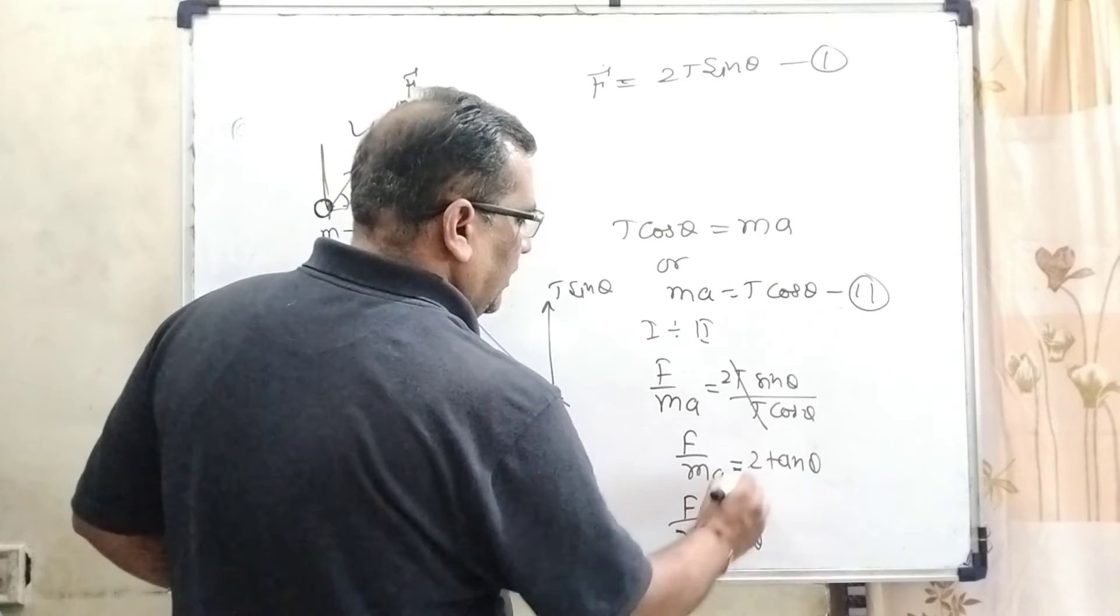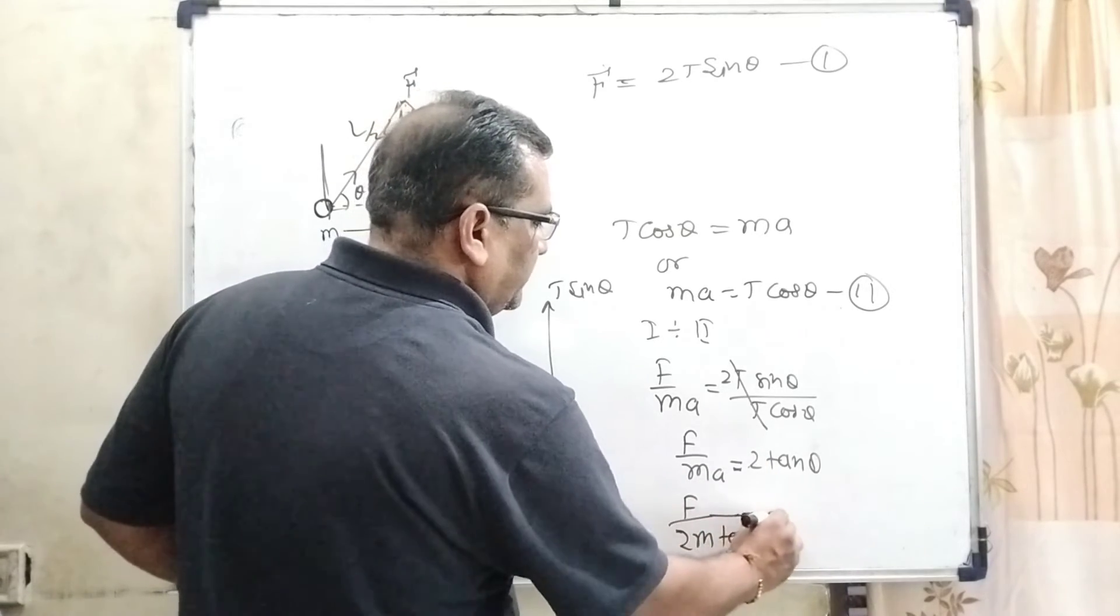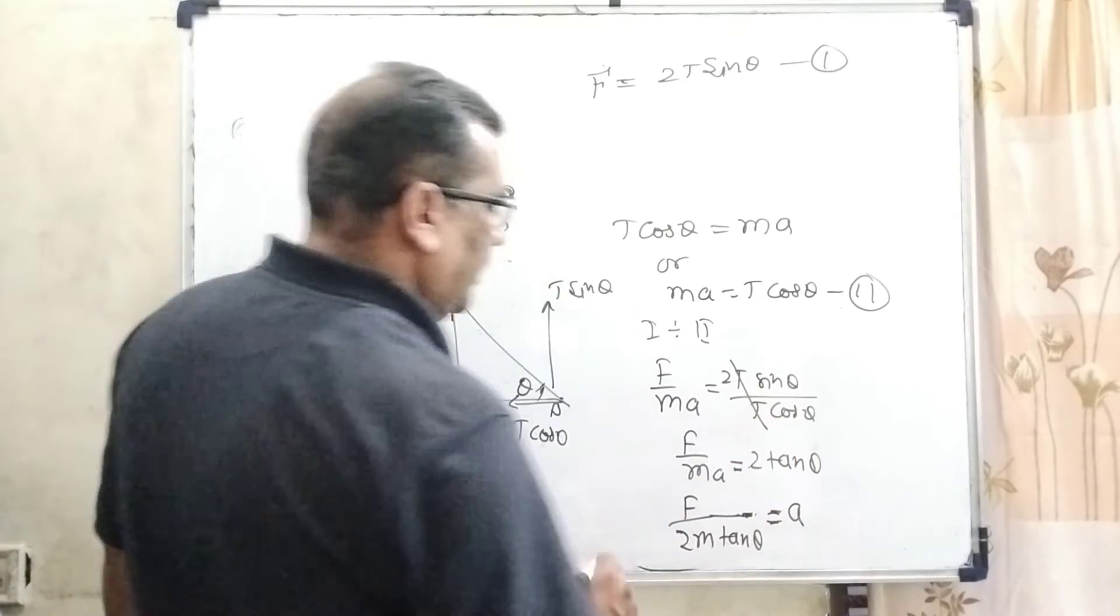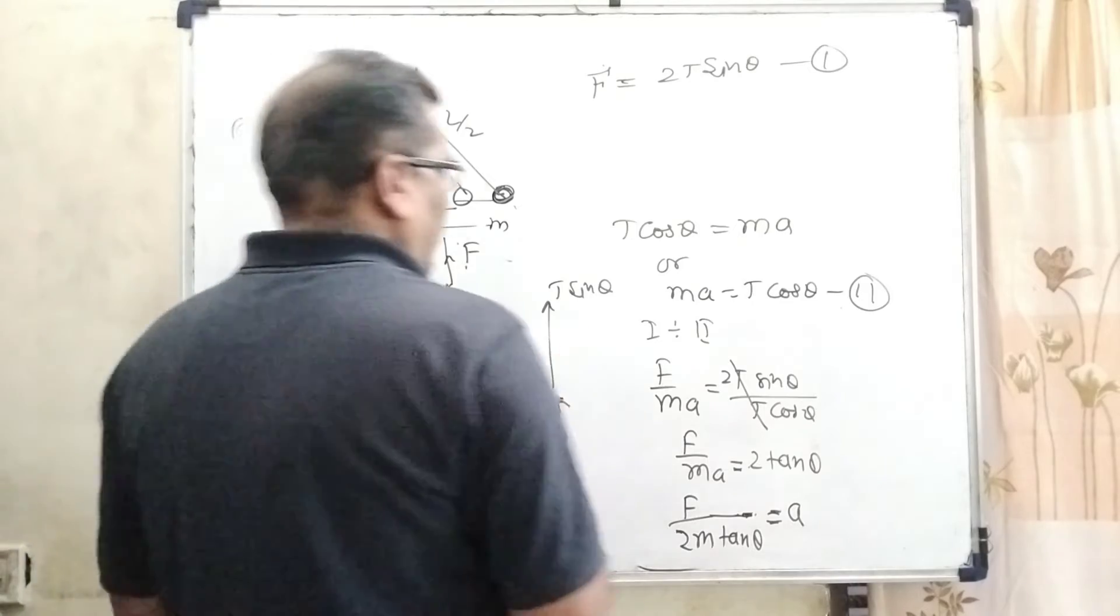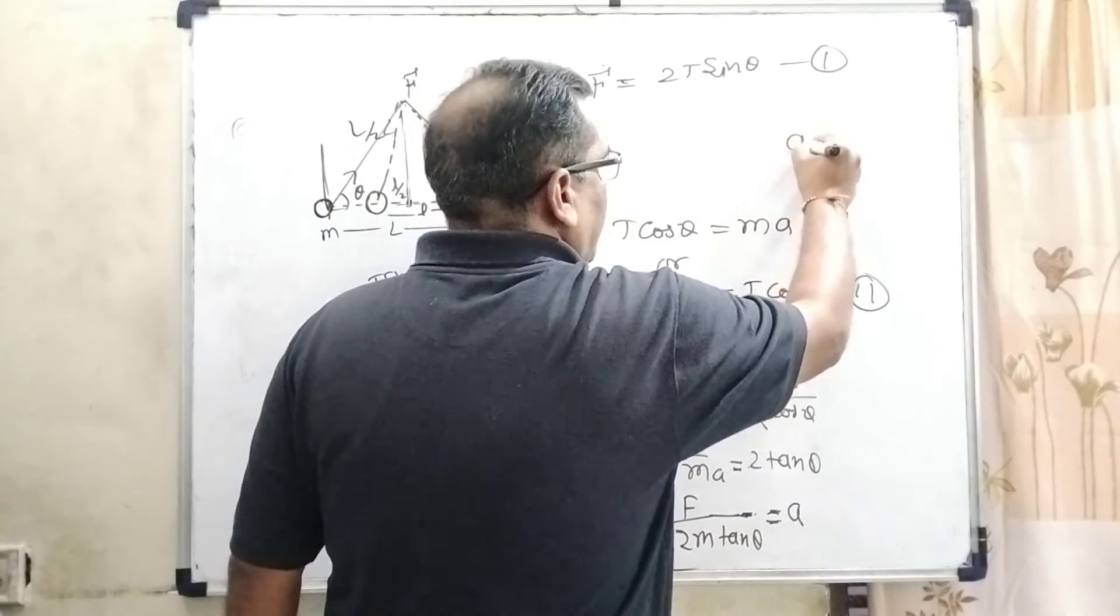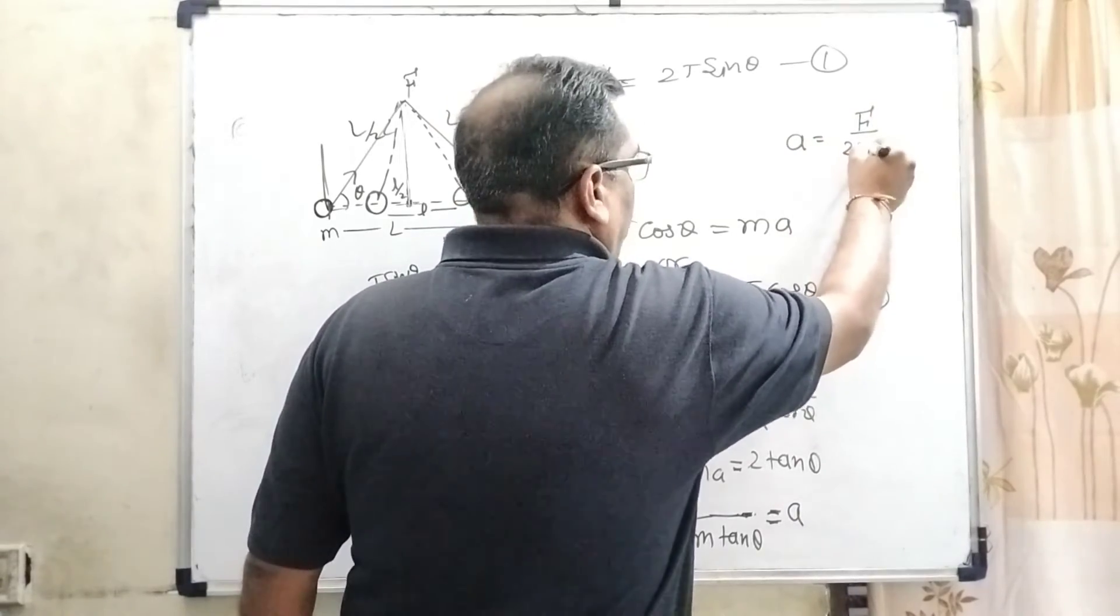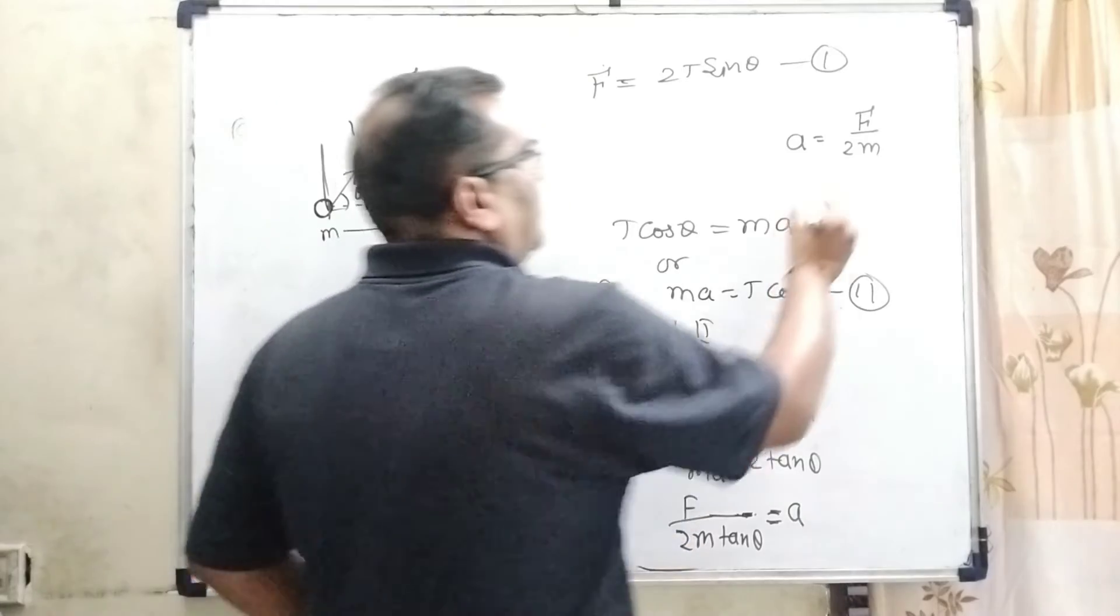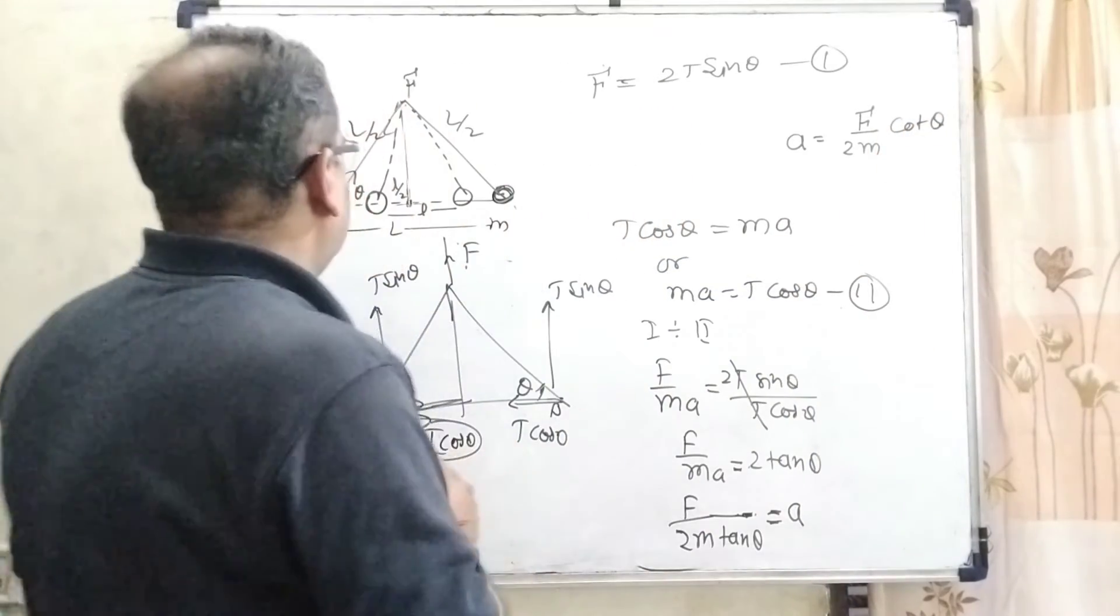Then it can be written as F, by transposing, into the left side in denominator 2 M tan theta. And this A goes by transposing to the right side in numerator. So F by 2 M tan theta equals A. Then it can be written as A equals F by 2 M, and 1 by tan theta can be written as cot theta.